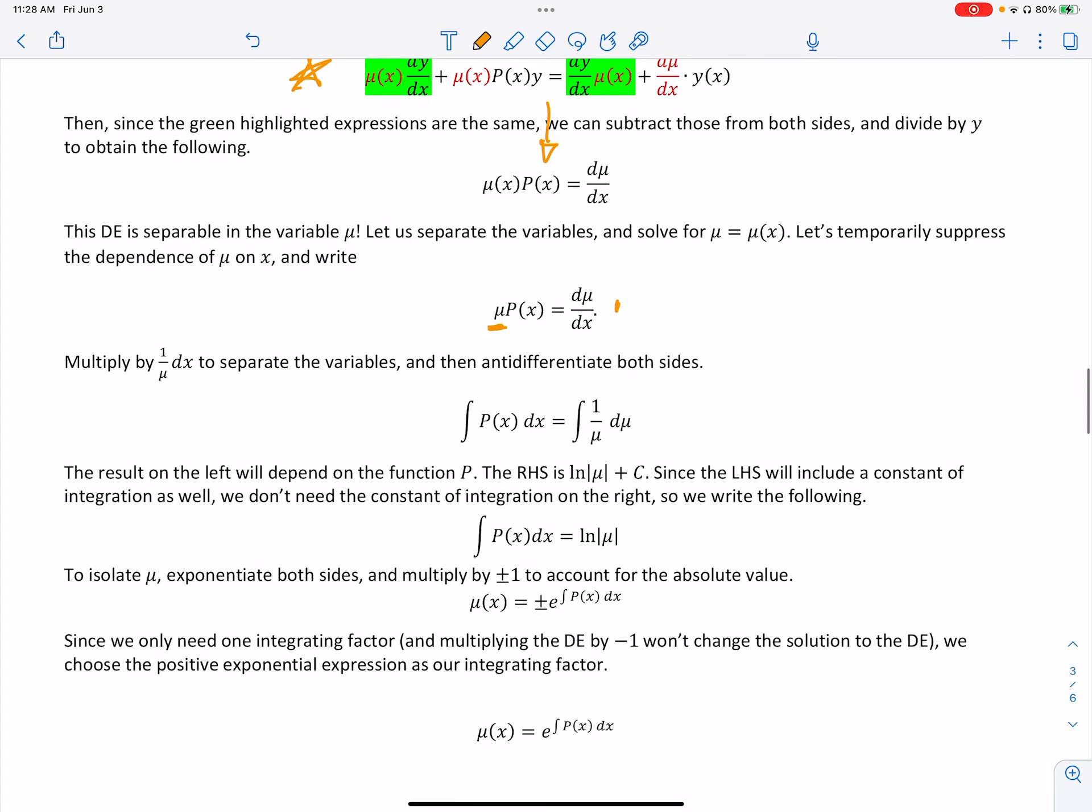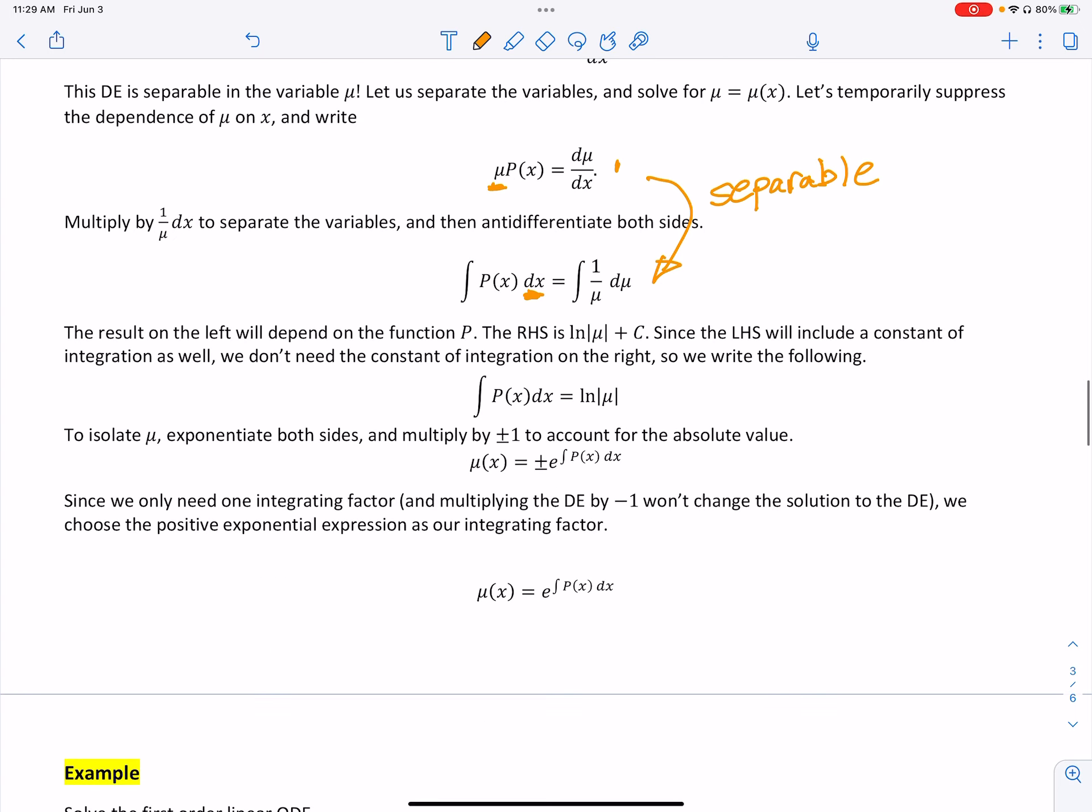And notice this is separable now. So I can actually times both sides by dx. That's where this came from. And then we divide both sides by mu. So here to here is just separable.